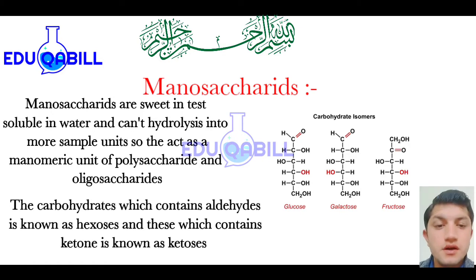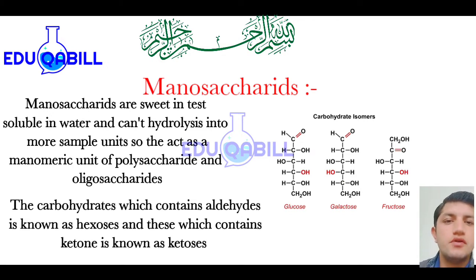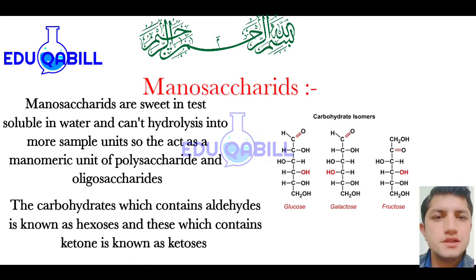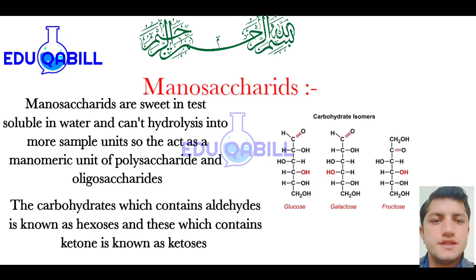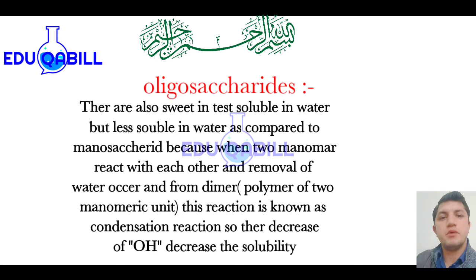Monosaccharides are sweet in taste, soluble in water, and they act as monomeric units of polymers of carbohydrates — meaning polysaccharides and oligosaccharides. All hexoses like glucose and fructose are monosaccharides. Carbohydrates which contain the aldehyde group are called aldoses, while carbohydrates which contain a ketone functional group are known as ketoses. Both aldoses and ketoses are structural isomers of each other.